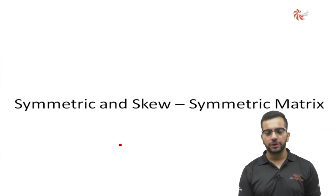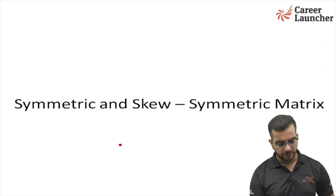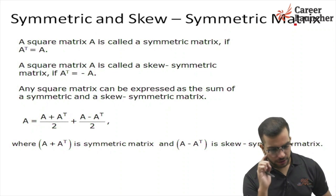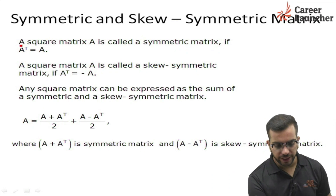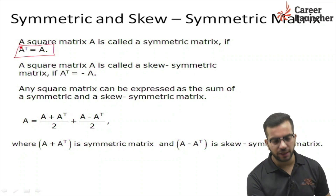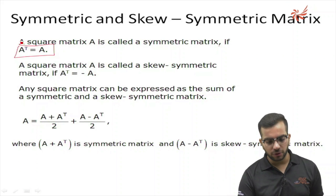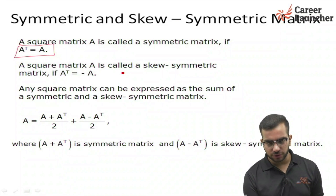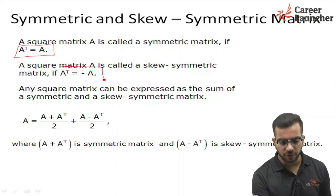Hello, now we are going to study symmetric and skew symmetric matrices. A square matrix A is called a symmetric matrix if A transpose equals A. Just remember this: if the transpose of a matrix is equal to that matrix, it is called a symmetric matrix. A square matrix A is called a skew symmetric matrix if A transpose equals the negative of the original matrix.